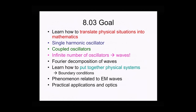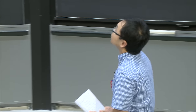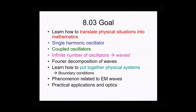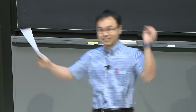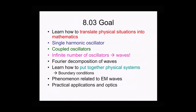Once we've learned that, we'll start looking at a single harmonic oscillator. Then we couple oscillators together to see how they interact. Then we go to an infinite number of oscillators — sounds scary, but it's not that scary. We'll see waves, because waves come from an infinite number of oscillating particles. Then we'll do Fourier decomposition, study boundary conditions, and look at electromagnetic waves and practical applications in optics.